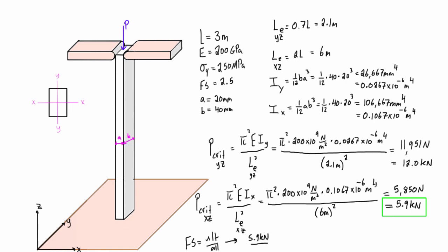Our factor of safety was 2.5, giving us an allowable load for this column of 2.36 kN. This is P allowable. That's our allowable load.